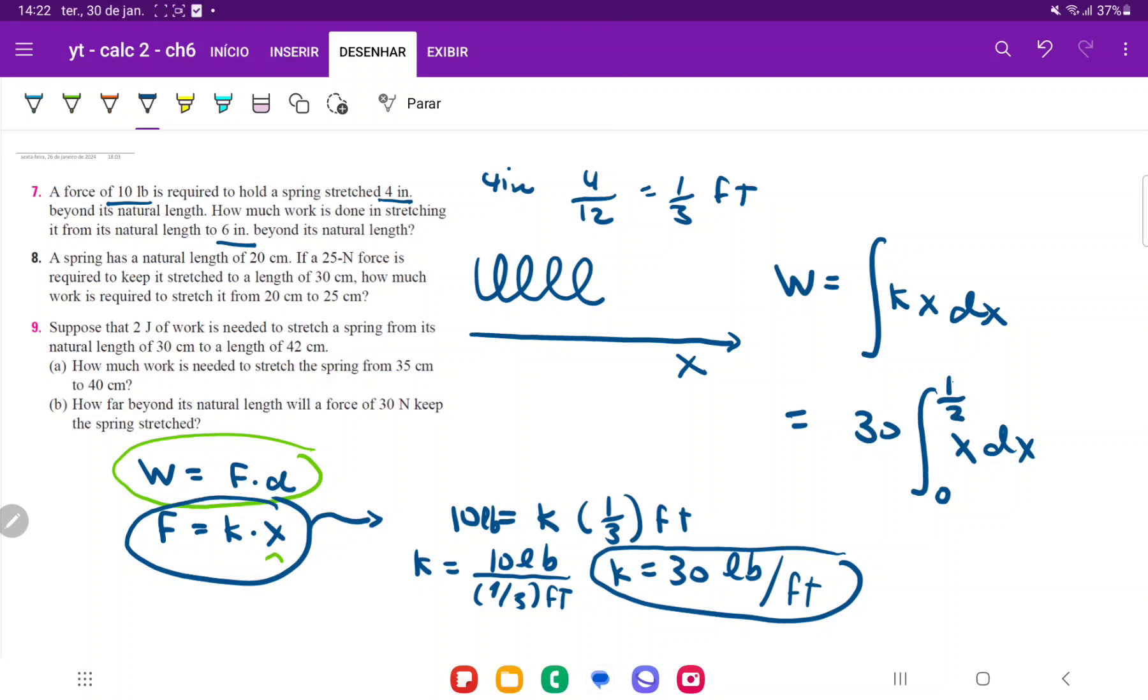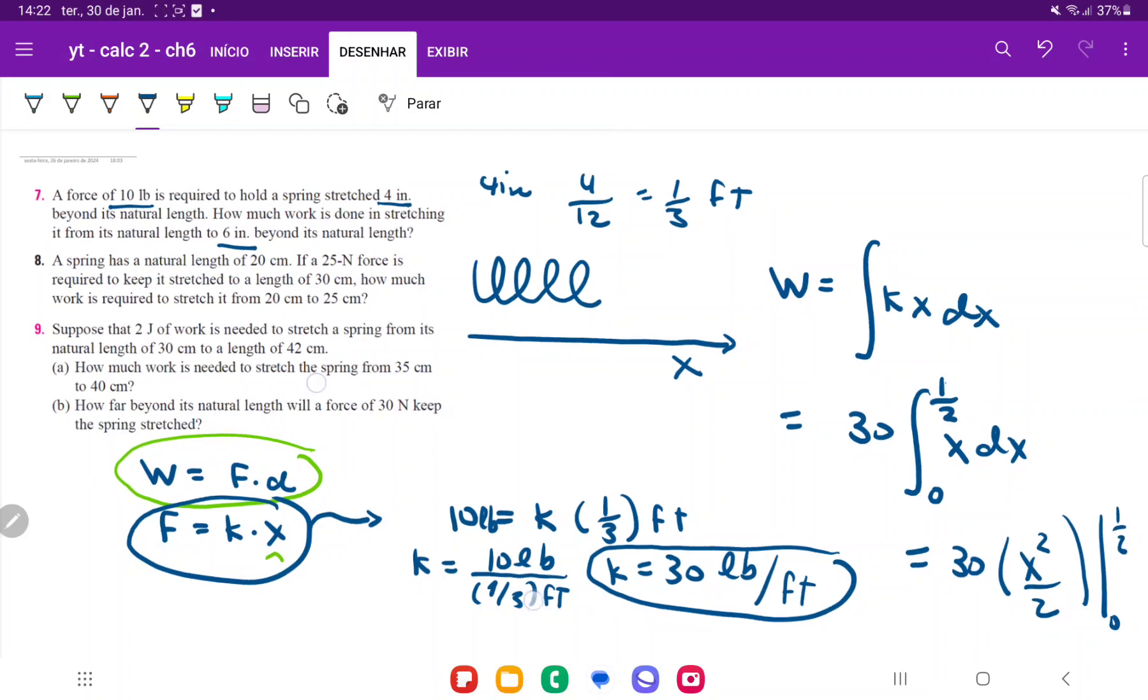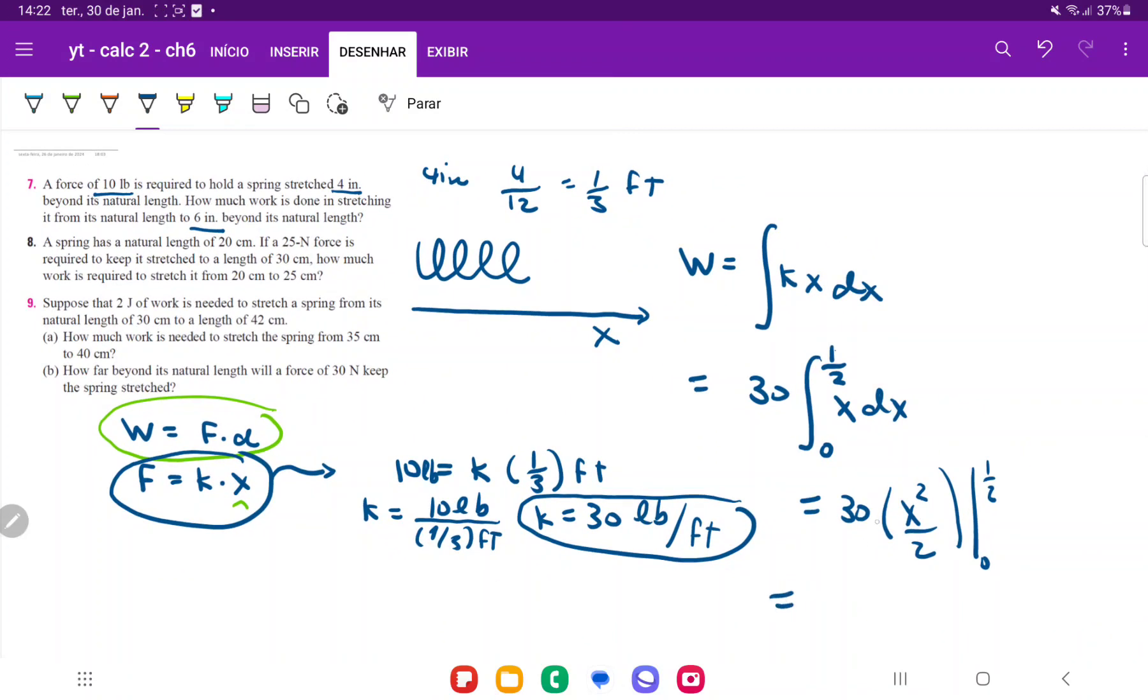And so we're now ready to integrate. So when we integrate, we get 30 times the integral of x is just x squared over two, and evaluated from zero to one half. So let me zoom out. And that's going to be - I'm going to put the two outside - so 30 divided by two, that's 15 times x squared, one half, minus zero squared. So one half squared is going to be one fourth. And therefore the answer is going to be 15 over four.